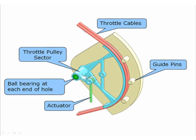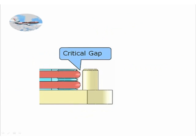These guide pins are here to make sure that these cables never come off the throttle pulley sector. So the critical gap is between the throttle pulley sector radius out here and the guide pins. We don't want this to come off, and the way that is checked is with a no-go gauge.